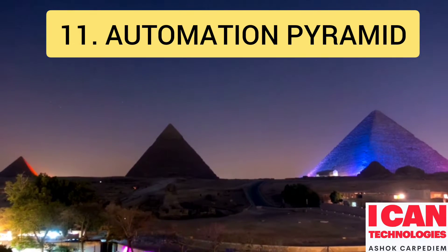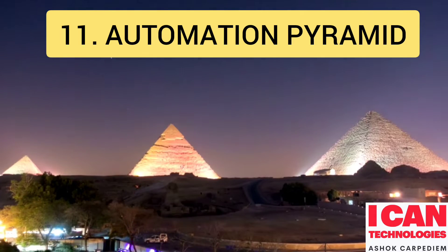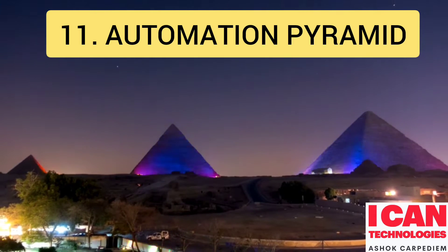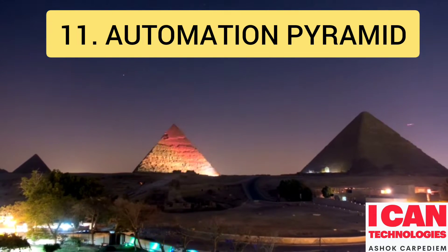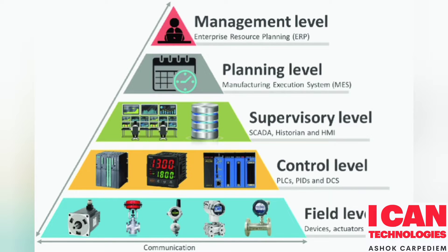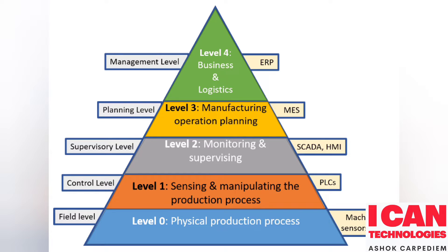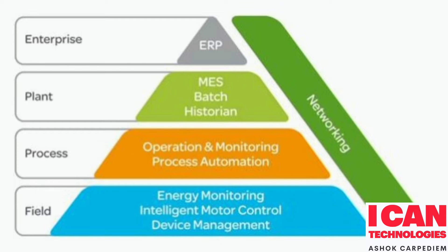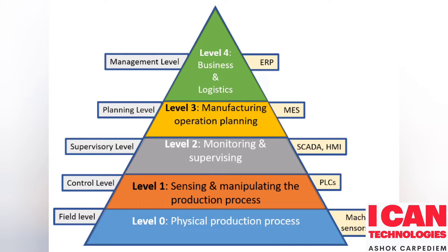Chapter 11 is the Automation Pyramid. In the Automation Pyramid, we will look at how the pyramid is built from the bottom to the top — what are the blocks, how they are arranged, and what are the levels in the automation system. All of this is explained in this chapter.